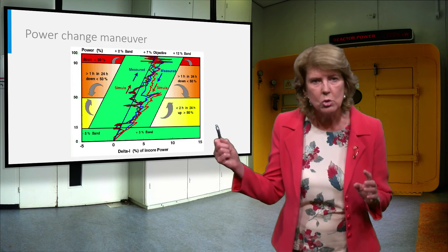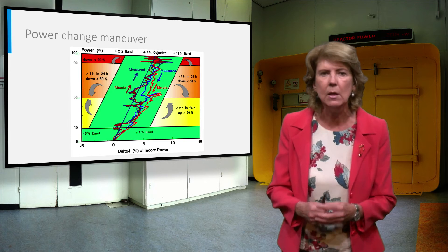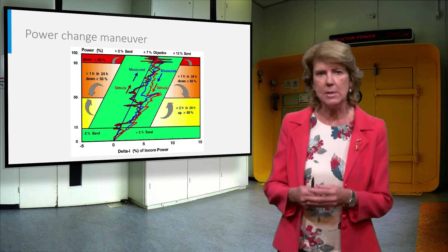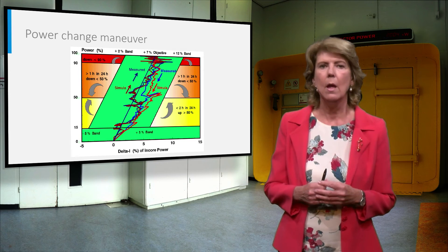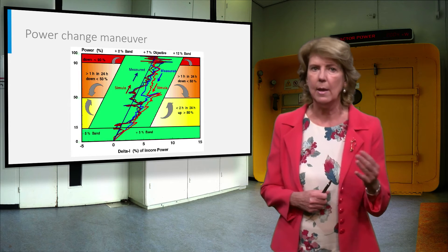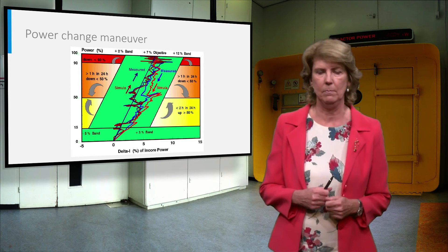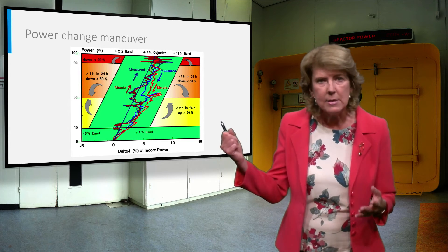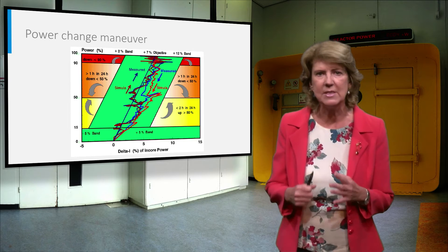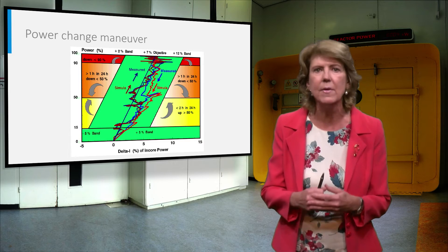This graph shows an example of the evolution of the axial asymmetry during a power change maneuver. The power is increased from 0% to 100% and after that lowered to 0% again. The blue lines indicate measurement data and the red lines indicate the results of a simulation.